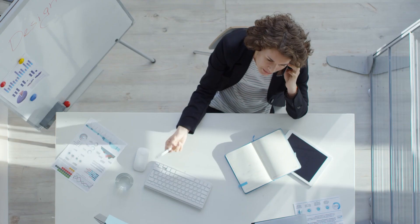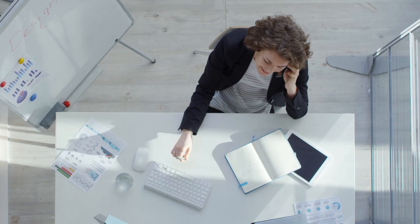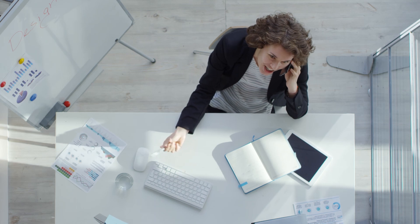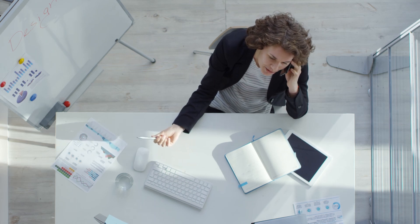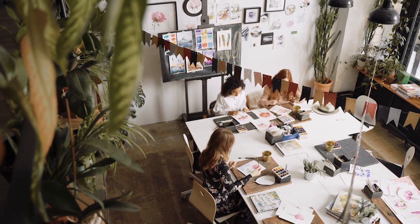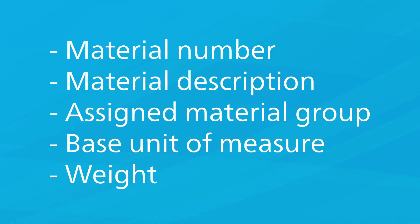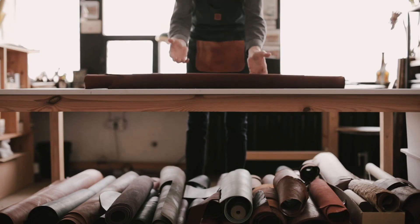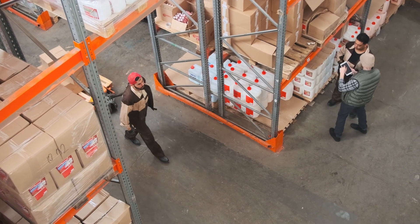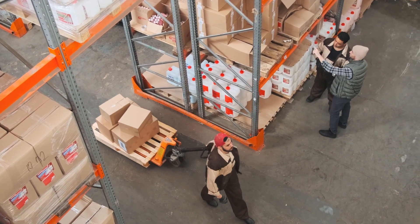In parallel to being structured according to views, the material master is set up along the organizational structure. A material master record contains data that is valid for the whole company: the material number, the material description, the assigned material group, the base unit of measure, the weight, and so on. This data is maintained at the client level.